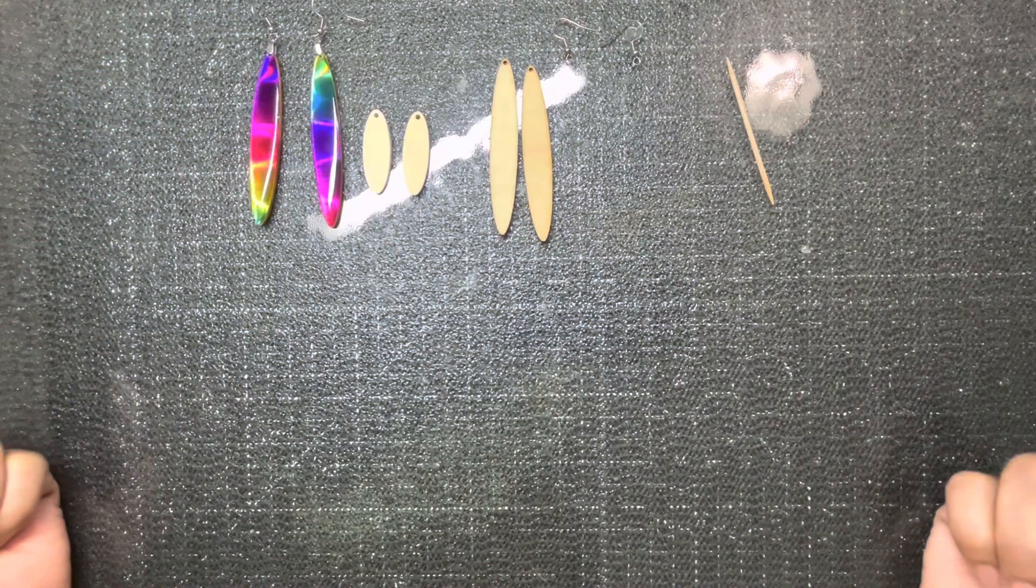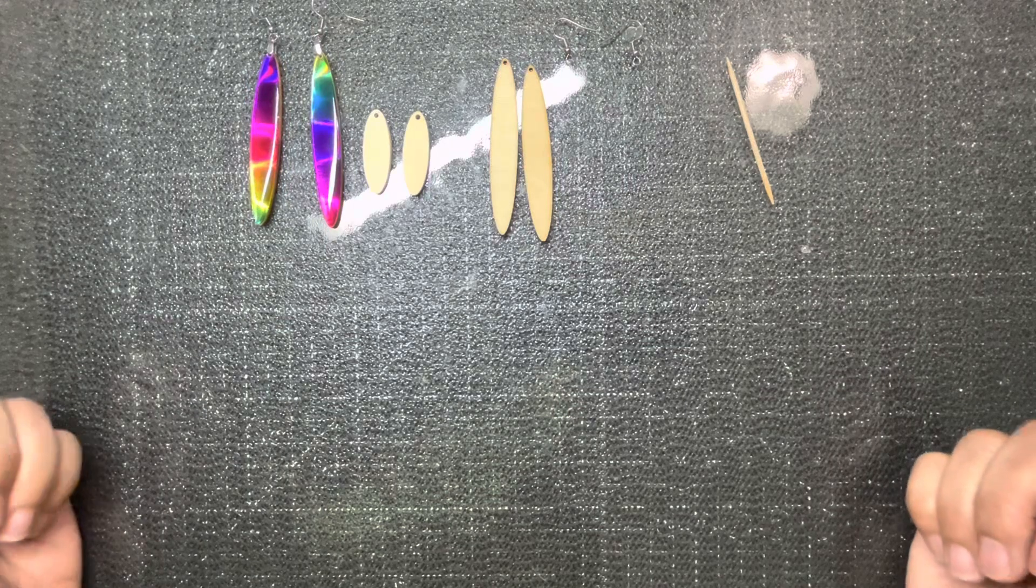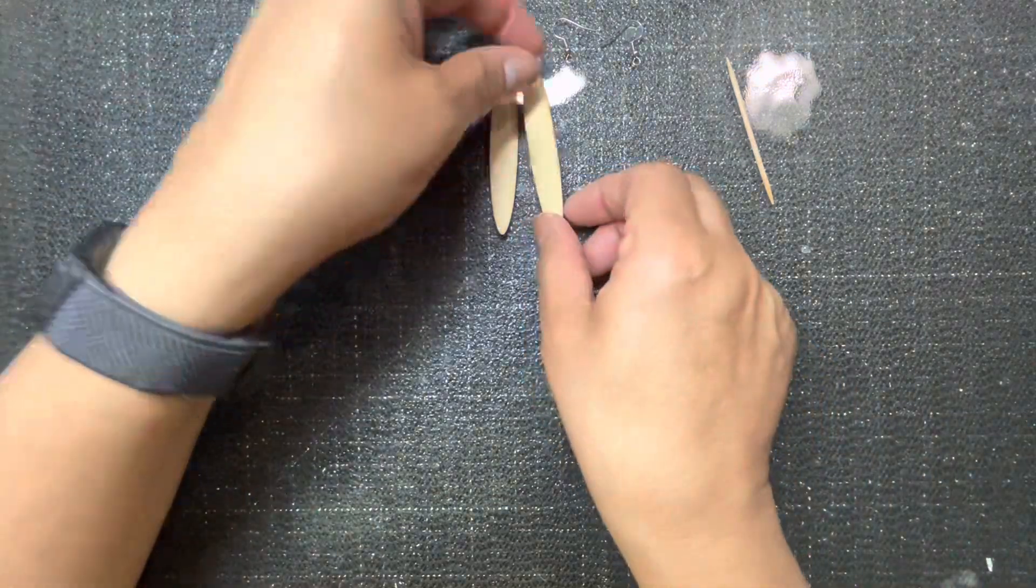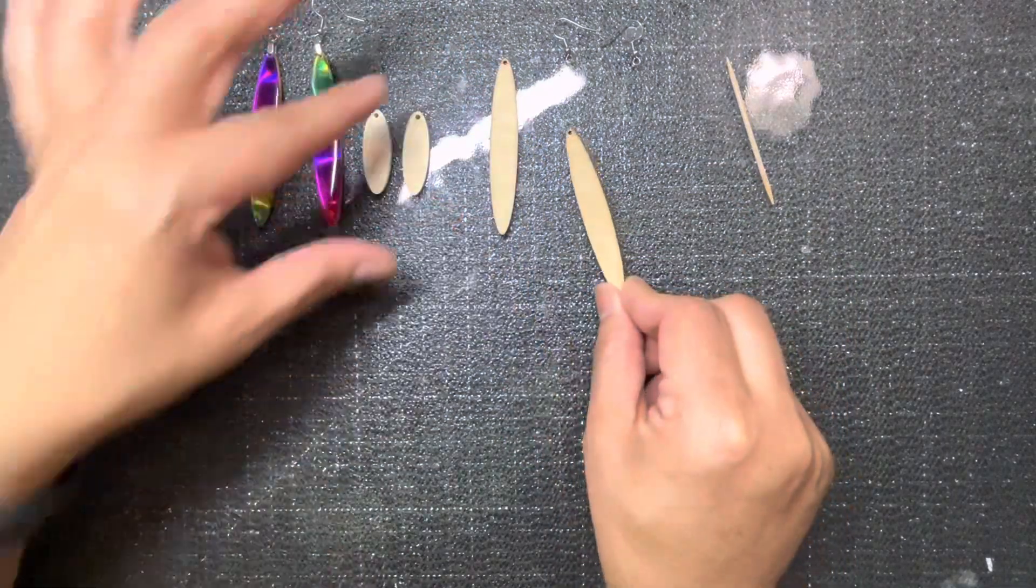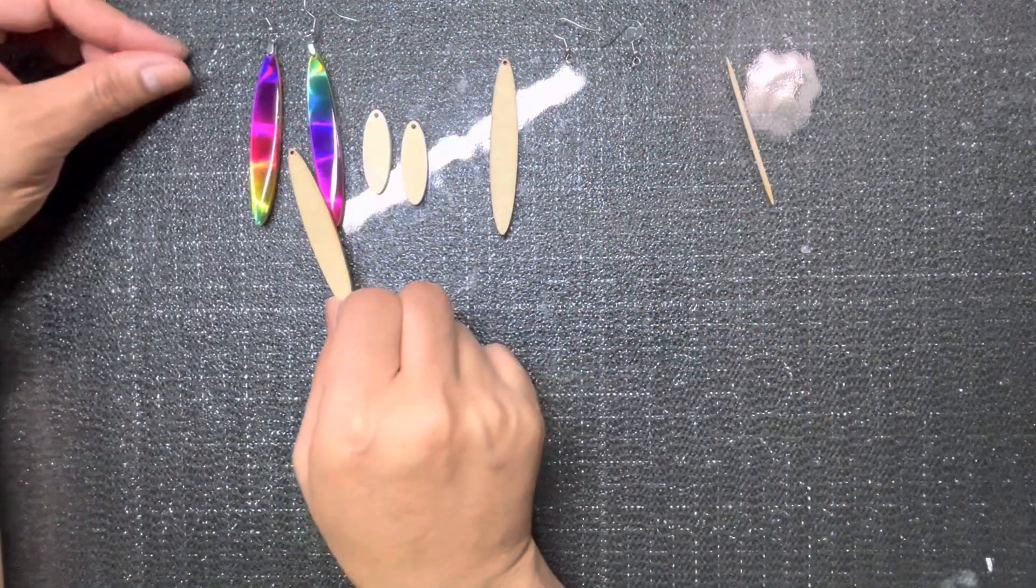If you try these, please tag me in the comments. I would love to see your finished product. So without any further ado, here we go. What you're going to need are some wood blanks. You can use any shape that you'd like. I have some larger ones like the ones I used here, I have some smaller ones.